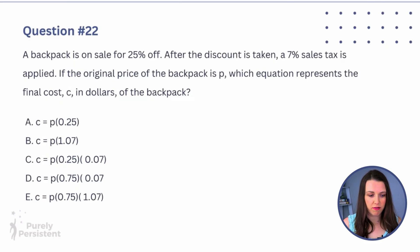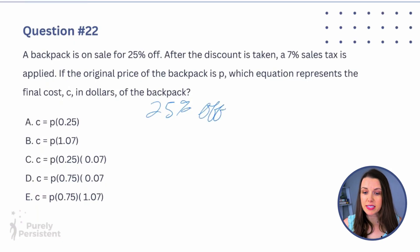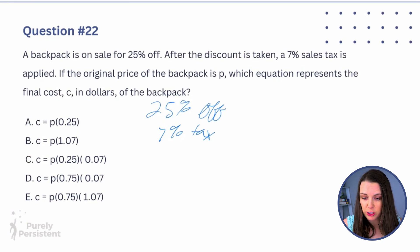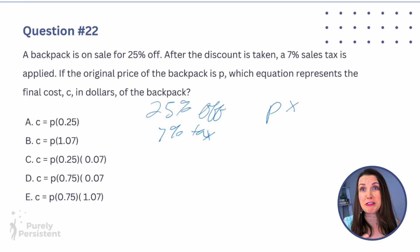Question 22: A backpack is on sale for 25% off. After the discount, a 7% sales tax is applied. If the original price is P, which equation represents the final cost C in dollars? Let's figure out what the backpack costs.